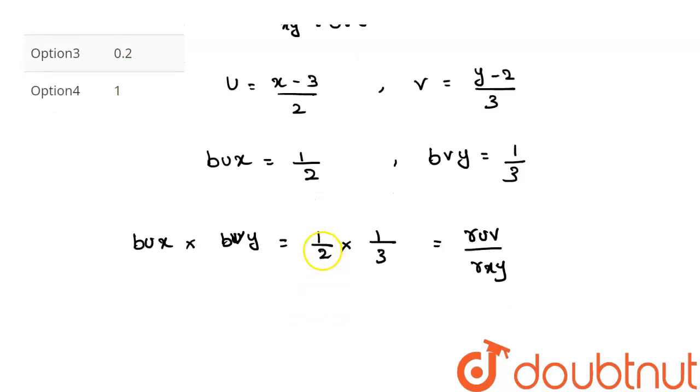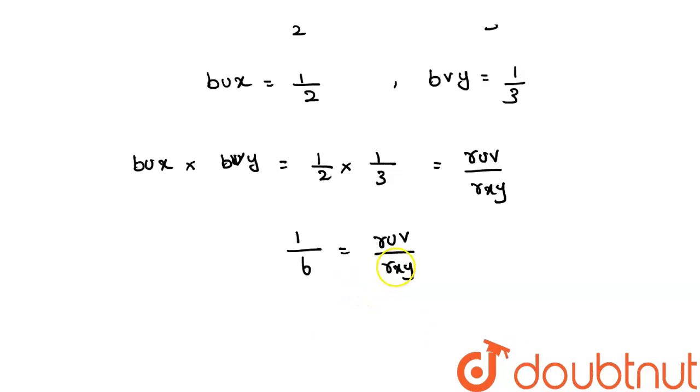Then 1 into 1, 1 divided by 2, 3, which is 6, is equal to ruv divided by rxy. If we take this denominator term into the numerator, 1 divided by 6 into rxy is equal to ruv.